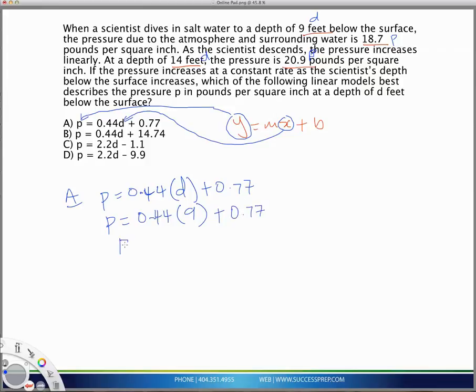Well, if you type this into your calculator, you're going to get a p that is 4.73. Now, if you think about that, that is not what you expect to get. You're expecting to get a p of 18.7 when you plug in 9. So, you could tell that a cannot be the correct one.